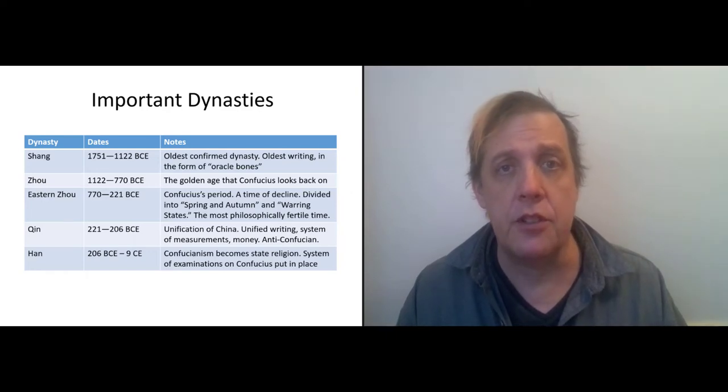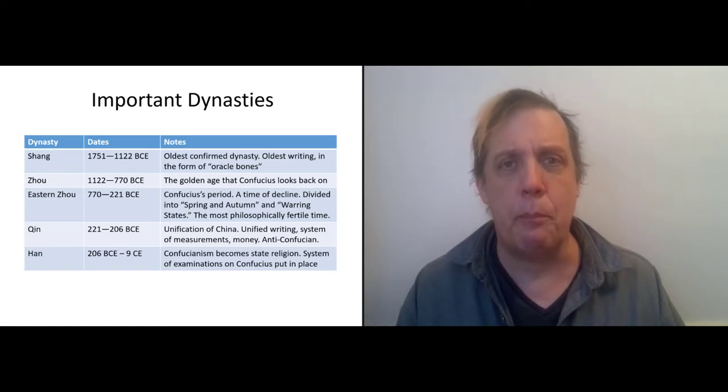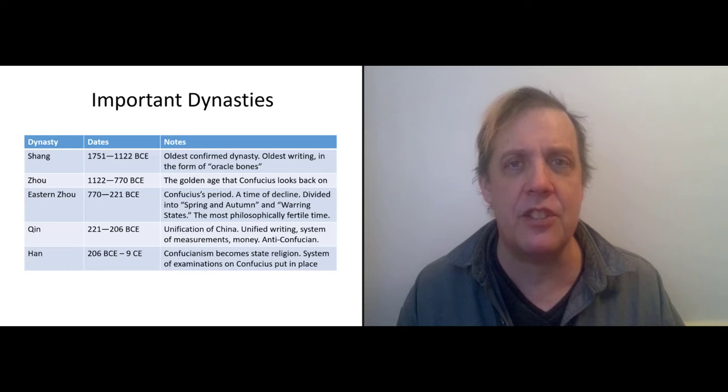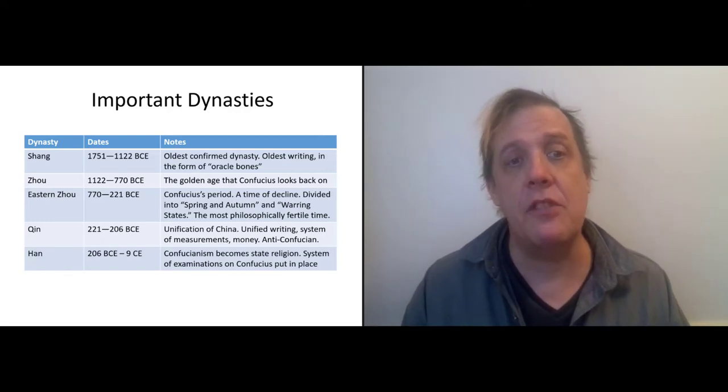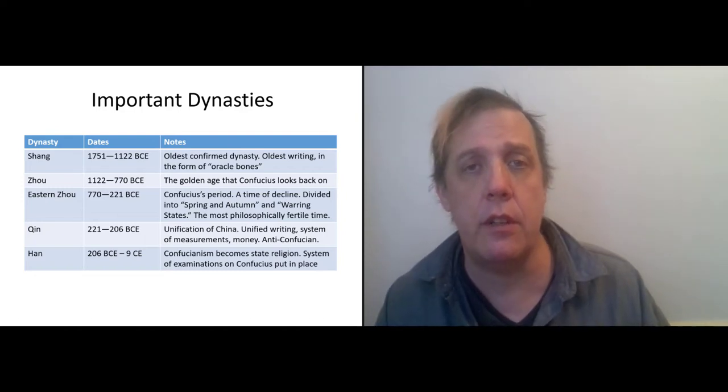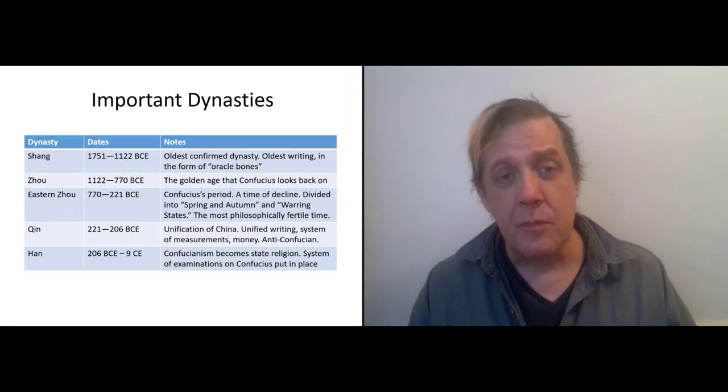And this is the period that Confucius looks back to as a Golden Age. So one of the things you need to understand to understand Confucius is that he was living in a time of chaos, sort of a post-apocalyptic time. There had been a big civilization that had collapsed. And that big civilization is the Zhou.